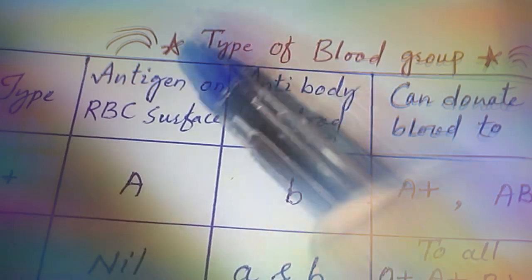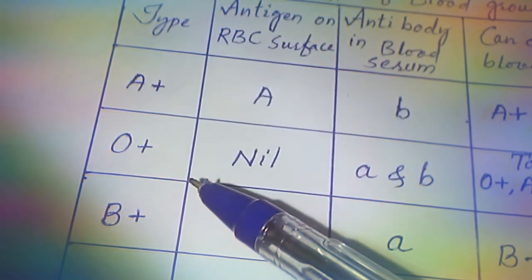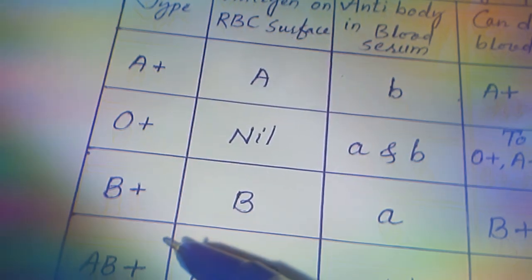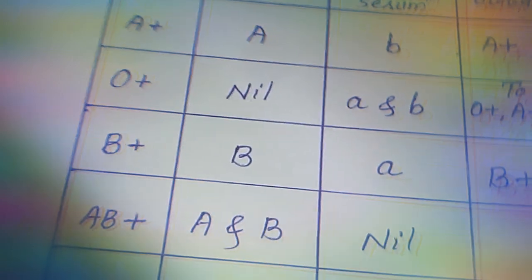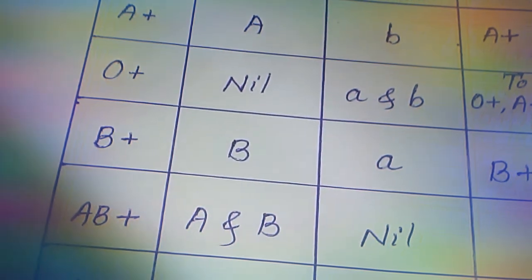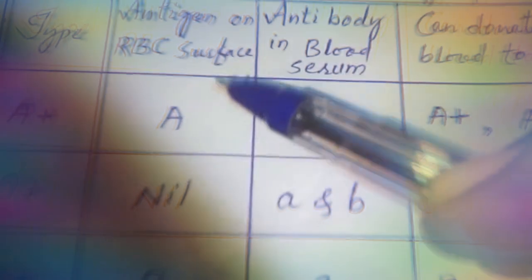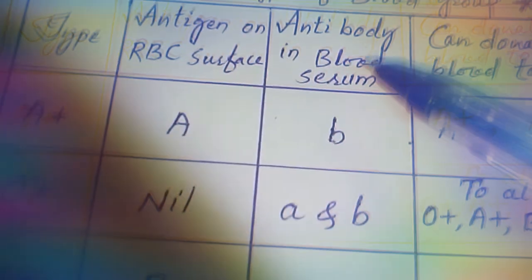Out of these four blood groups, blood groups A, B, and O were discovered by Karl Landsteiner, while blood group AB was discovered by Landsteiner's students De Castillo and Sturli. All four blood groups exist because of their respective antigens on the RBC surface.